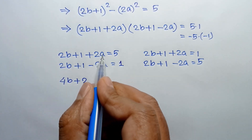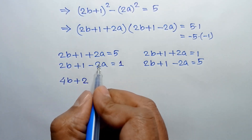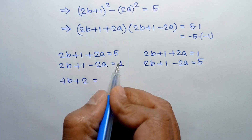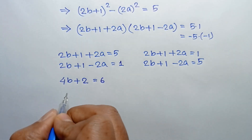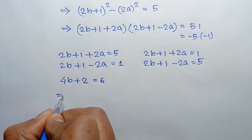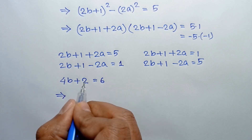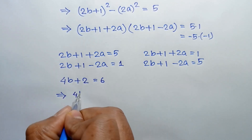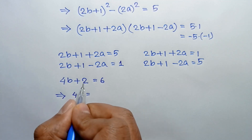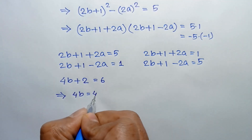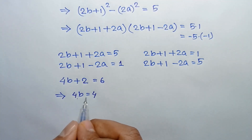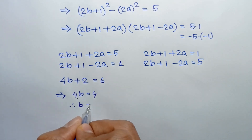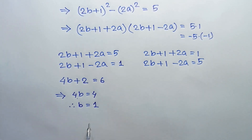The 2a terms cancel out, leaving 4b + 2 = 6. Taking 2 to the right side we have 4b = 4. Dividing both sides by 4 we get b = 1.